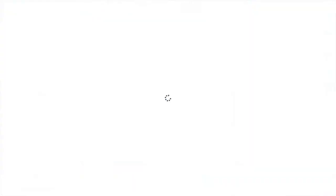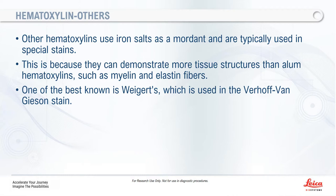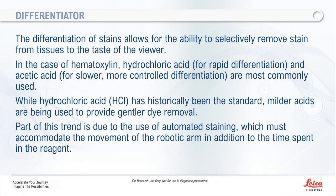Other hematoxylins use iron salts as a mordant and are usually found in special stains, because they generally demonstrate more tissue structures than alum hematoxylins — things like myelin or elastin fibers. One of the best known is Weigert's, which we use in the Verhoeff-van Gieson stain, also known as the elastic stain.